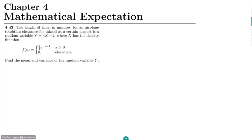Welcome back guys. This is question 4.43 of chapter 4. The statement of this question is: the length of time in minutes for an airplane to obtain clearance for takeoff at a certain airport is a random variable Y equal to 3X minus 2, where X has the density function f(x) equal to (1/4)e^(−x/4) for x greater than 0, and 0 elsewhere. For this random variable Y, we have to find the mean and variance.